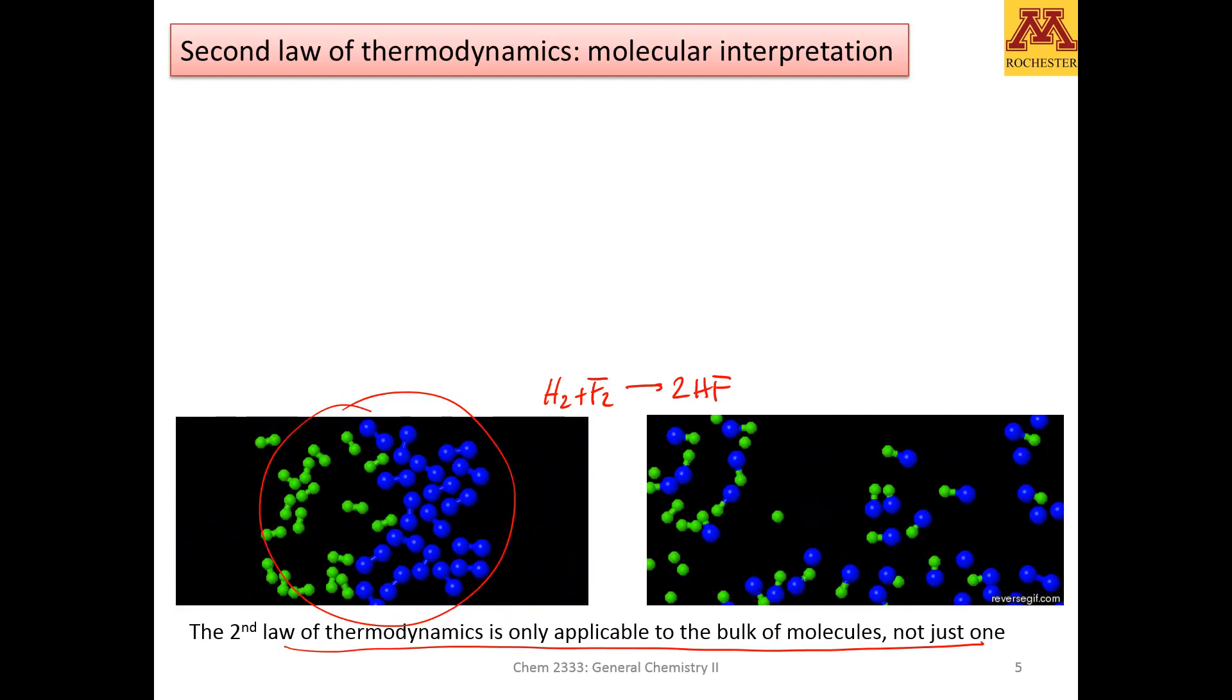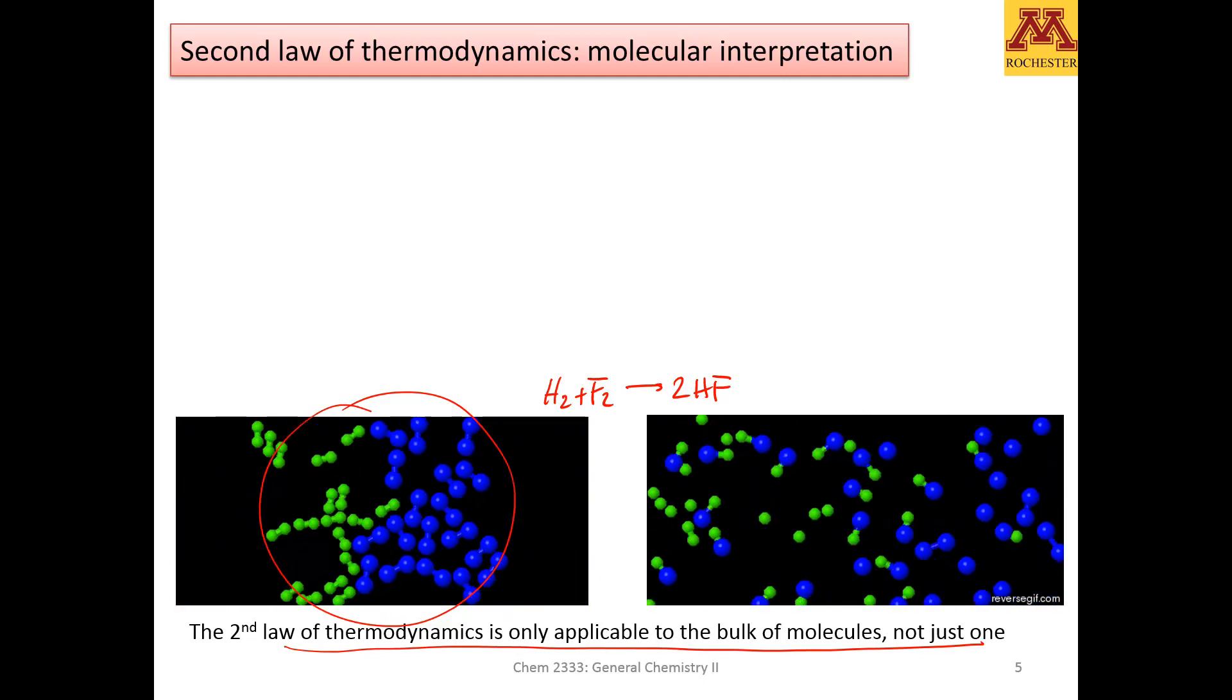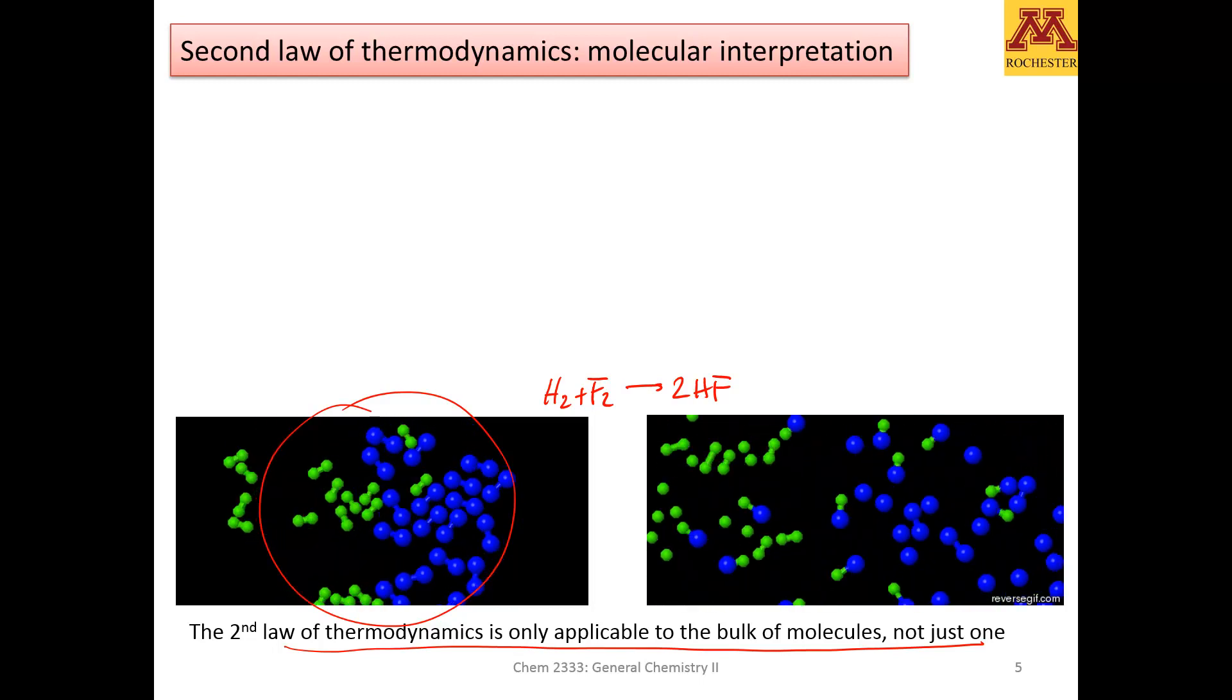Nature tends to change towards states of higher distribution of energy and particles. Let's try to give you another example, and we will have to come up with a magnitude called entropy.